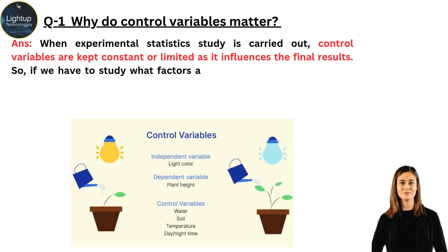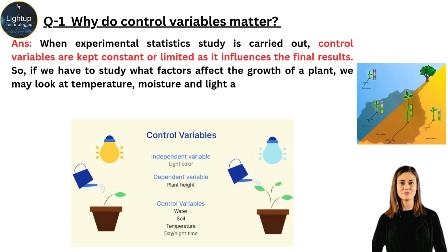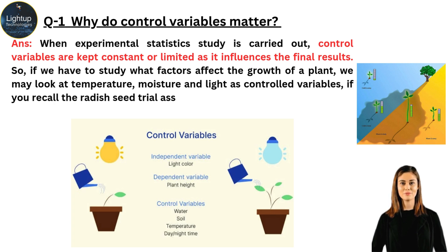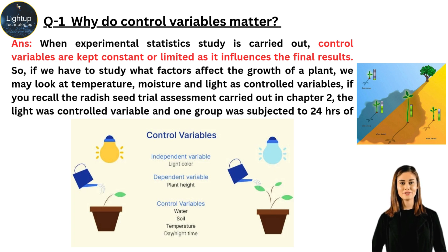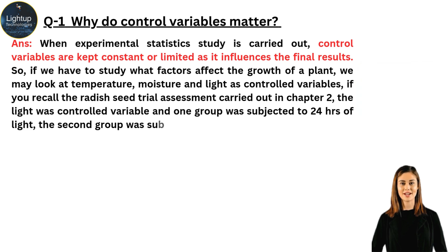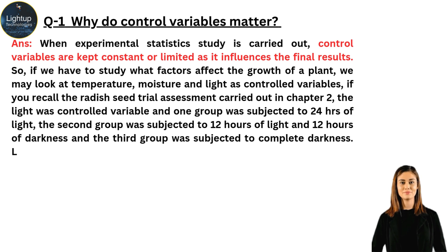If we have to study what factors affect the growth of a plant, we may look at temperature, moisture and light as controlled variables. If you recall the radish seed trial assessment carried out in Chapter 2, the light was a controlled variable. One group was subjected to 24 hours of light, the second group to 12 hours of light and 12 hours of darkness, and the third group was subjected to complete darkness.